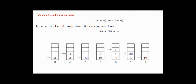Consider the arithmetic expression: three multiplied by four, added with five multiplied by six. First we insert three, then four, then we have multiply — the result is 12. Then we push five, then we push six, we have multiply — we multiply six by five giving 30. Then we have add — the result is 42.